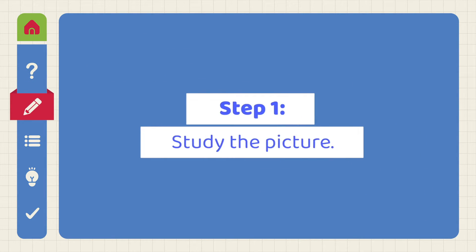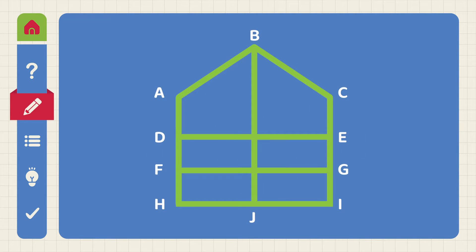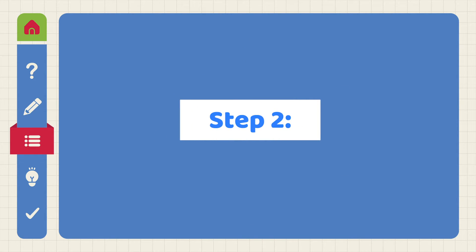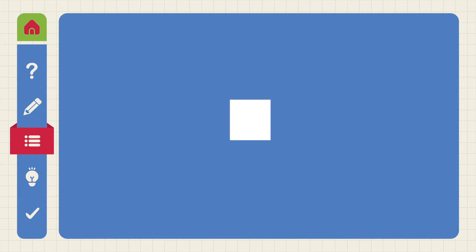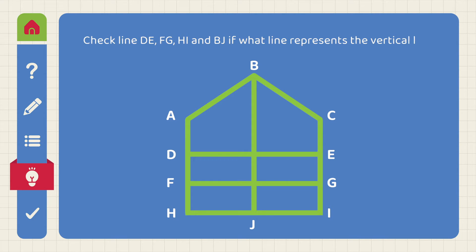Step 1: Study the picture. Step 2: Check lines DE, FG, HI, and BJ to determine which line represents the vertical line.